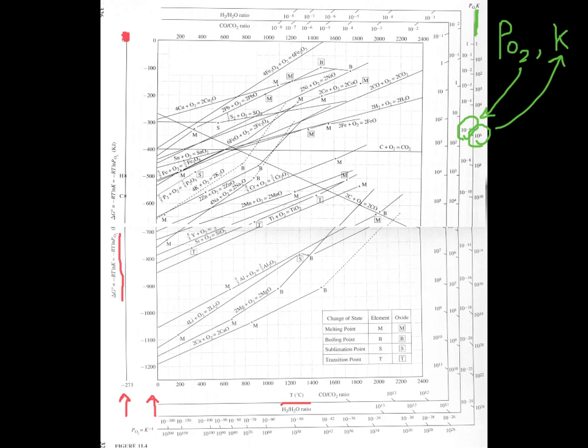You can see that there are lots of different oxidation reactions here labeled. The legend here shows you that some of these have a melting or boiling reaction either for the element or for the oxide, so that's what those points are on there. We will likely not talk about the CO/CO₂ ratio or H₂/H₂O ratio, but that's what these other axes are for here.